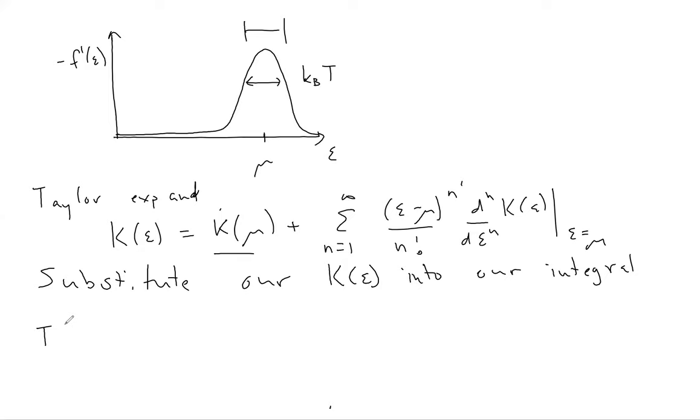But the first term is going to truly give us K at mu, since the integral of minus dF/dE from minus infinity to infinity gives us 1. So that's one simplification that we can make.